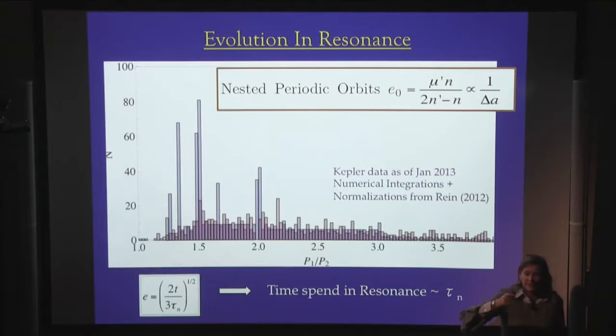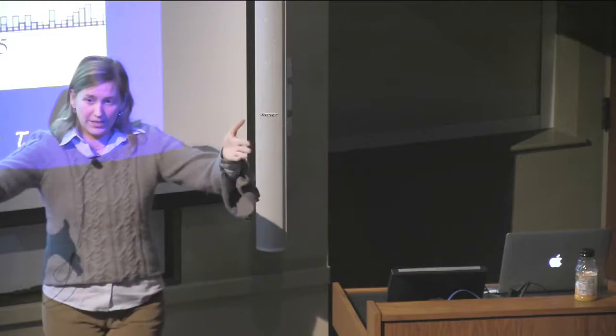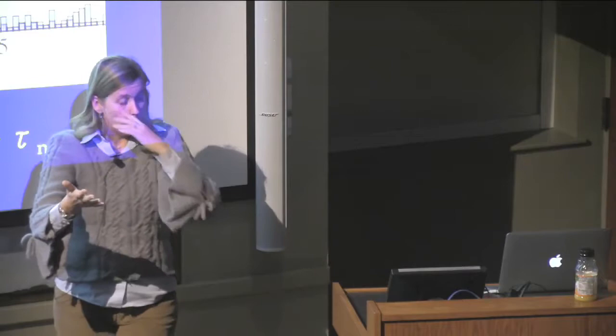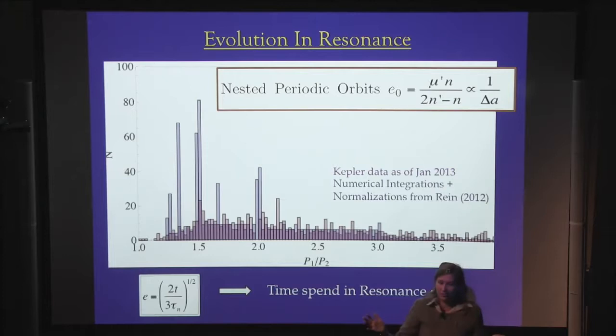If you have planets in a system with convergent migration — so the two planets' orbits approach one another — such that you can get capture in resonance, migration will keep pushing them closer and closer. In resonance, the eccentricity of the planet will grow and keep growing until it reaches of order unity and then escapes from the resonance. The key thing is that the time it takes for the eccentricity to grow in resonance is the same timescale it takes to migrate in the disk — the migration timescale.